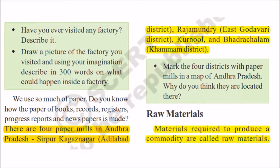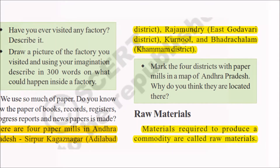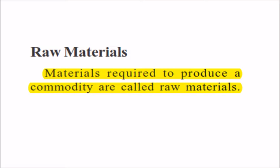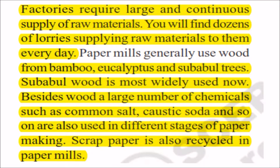What are the raw materials required for this industry? A raw material is a material required to produce a commodity. For making paper, we generally need bamboo, eucalyptus, or subabul trees. Paper factories require a large and continuous supply of these raw materials.